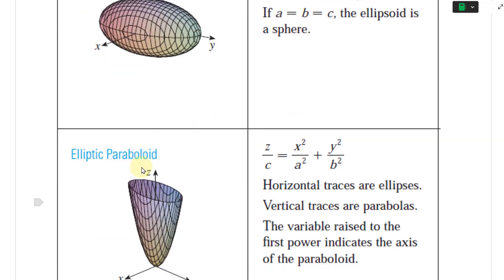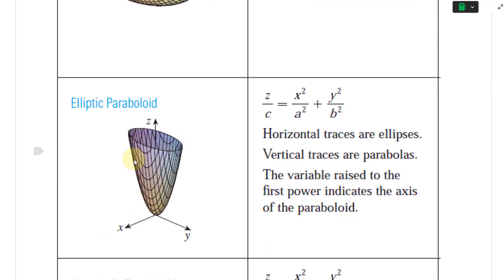Next is the elliptic paraboloid. It's an ellipse horizontally and a paraboloid vertically. The equation is z/c = x²/a² + y²/b². Horizontal traces are ellipses and vertical traces are parabolas. The variable raised to the first power indicates the axis of the paraboloid — in this case z is to the first power, so that's the axis.